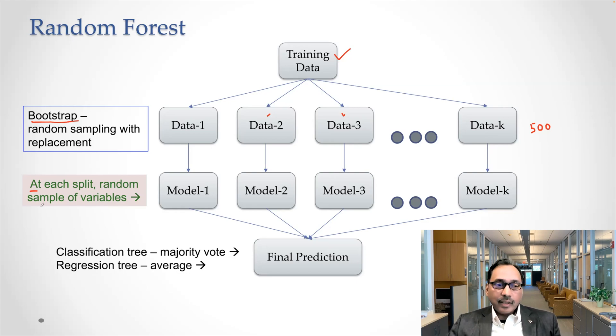So at each split, random sample of variables, not all. Now you have model one up to model K. So if you had 500 different data sets created out of training, then you're looking at 500 trees compared to bagging. Random forest, we are restricting how many variables you should use while making a decision about splitting the tree. So at each step, a branch has to be split into two.